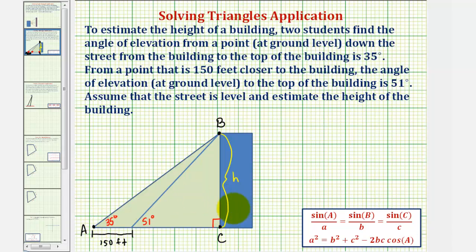Let's find some additional information from our sketch. These two angles are supplementary because they form a straight angle. Therefore, to find the measure of this angle, we take 180 degrees minus 51 degrees, giving us 129 degrees. Looking at this right triangle, this angle and the right angle are complementary, so this angle is 90 degrees minus 51 degrees, or 39 degrees.